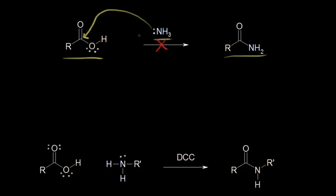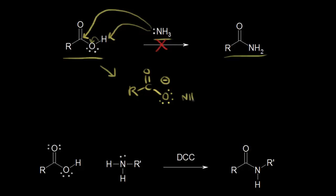The ammonia is going to function as a base instead, taking the acidic proton on your carboxylic acid and leaving these electrons behind on the oxygen. So you would actually form your carboxylate anion — three lone pairs of electrons on the oxygen giving it a negative one formal charge — and ammonium (NH4+). So we have our ammonium salt.